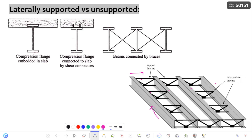In simple terms, that is the basic definition. If you get into the deeper structural engineering perspective, whenever the compression flange is restrained against lateral torsional buckling, then it is called a laterally supported beam. How can you restrain this lateral torsional buckling? Here, this is the compression flange which is embedded in the slab.